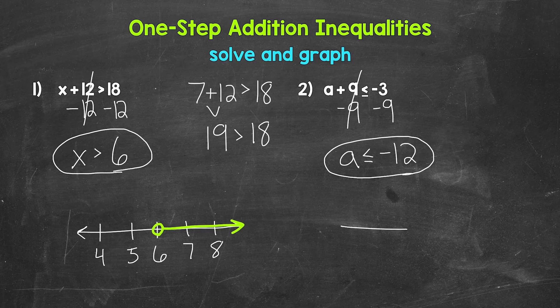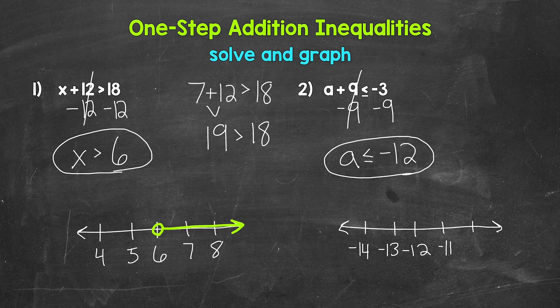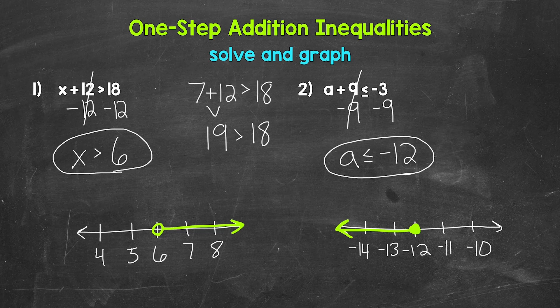So a is less than or equal to negative 12. Now we are ready to graph this. Start with a number line and put negative 12 in the middle, with a couple of numbers on both sides: negative 14, negative 13, negative 12, negative 11, negative 10. A is less than or equal to negative 12 — negative 12 is a solution and needs to be included, so we fill a circle at negative 12. Then we need all values less than negative 12, so an arrow going left. That's our graph.